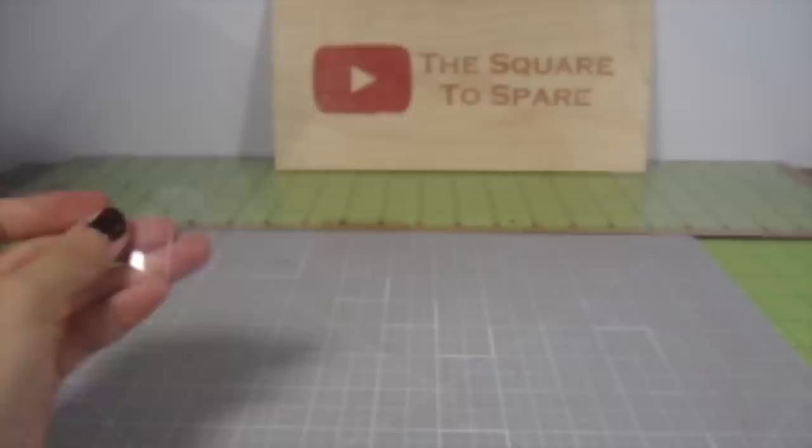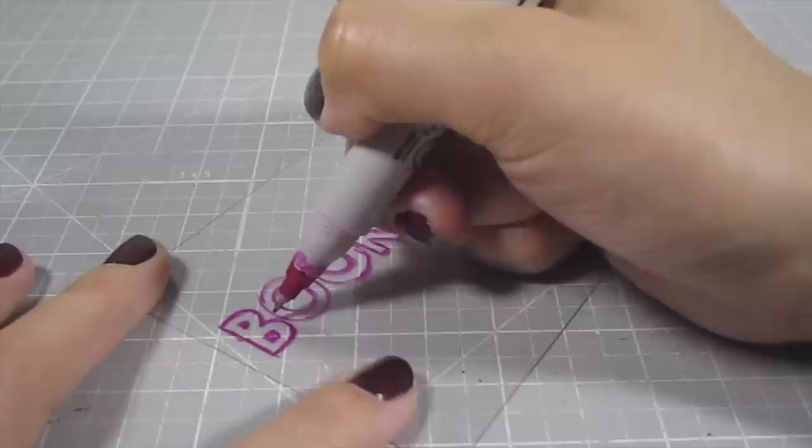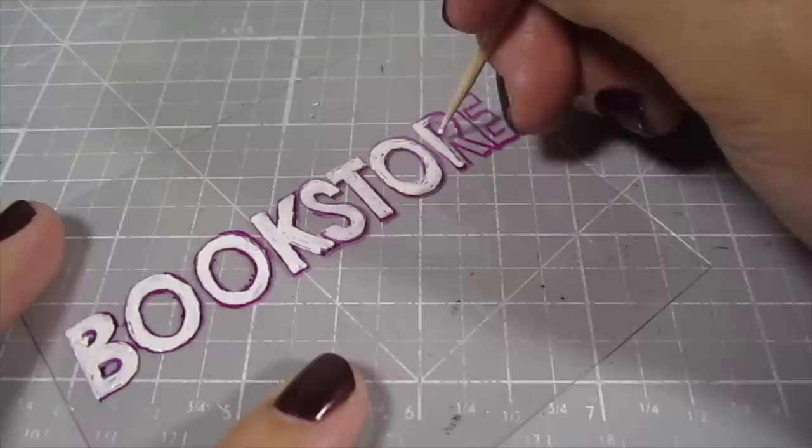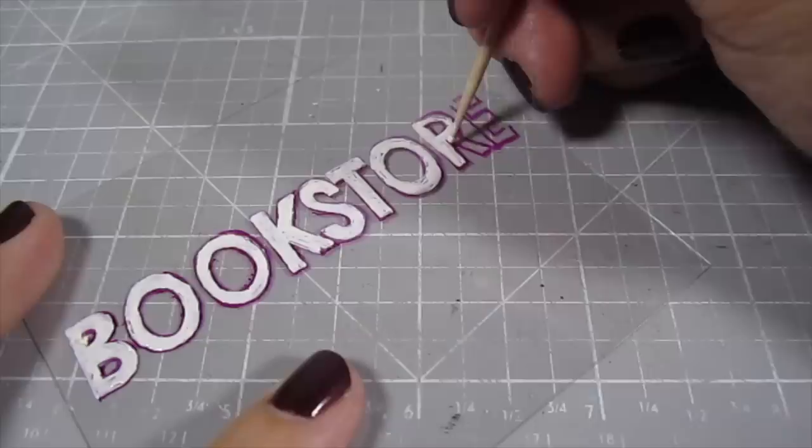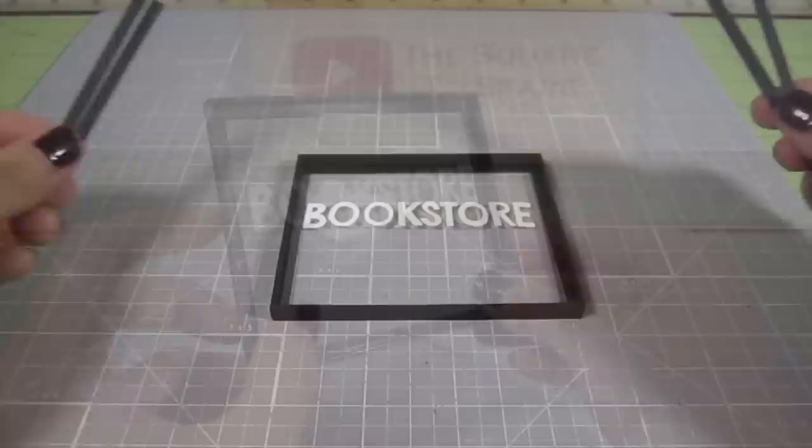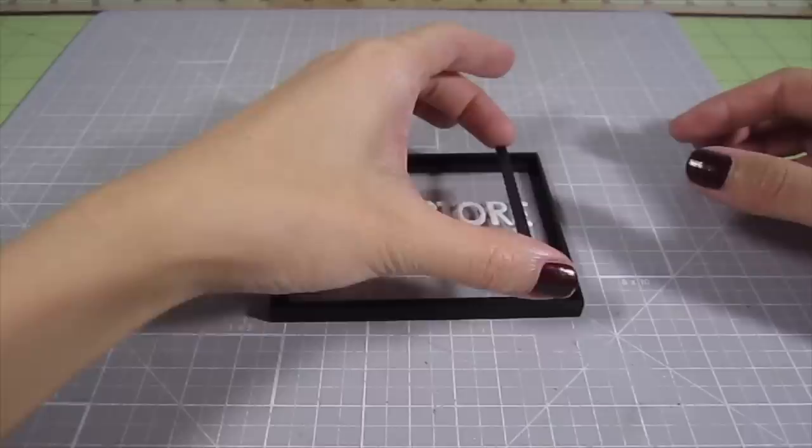This is optional, but I write bookstore onto the plastic with a sharpie as an outline. Then with some white nail polish and a toothpick, slowly fill in the outline. Once it's dry, I use rubbing alcohol to remove the sharpie ink. Place this piece inside the window frame and add some painted coffee stirrers to the top. Now you can install the window into the opening on the storefront.